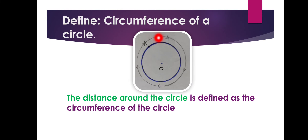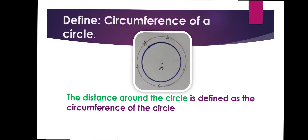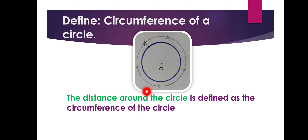Define circumference of a circle. The distance around the circle is defined as the circumference of the circle. For a square and rectangle, you call the distance around the figure as perimeter. For a circle, we call it circumference.